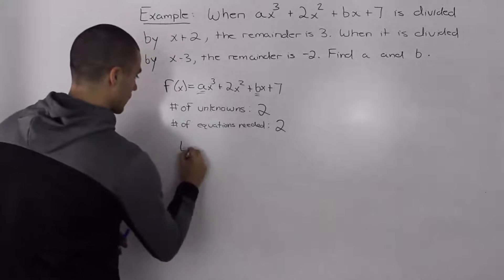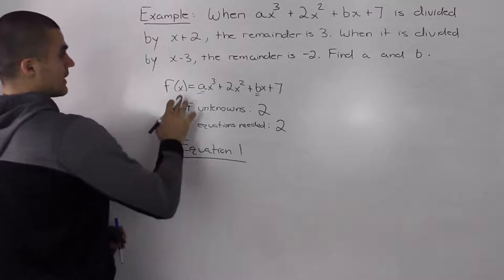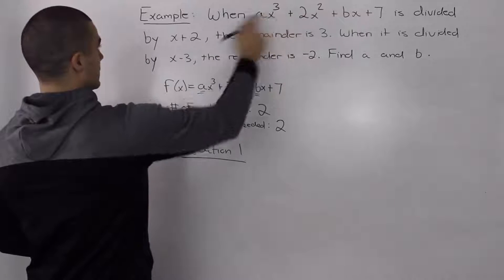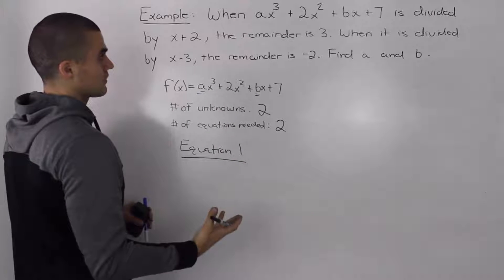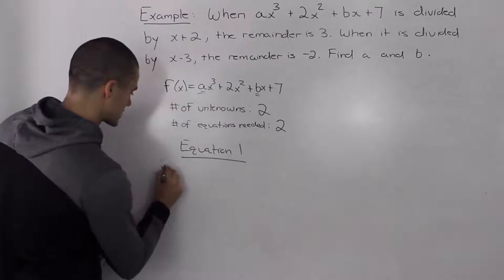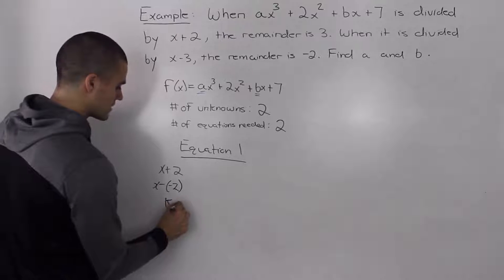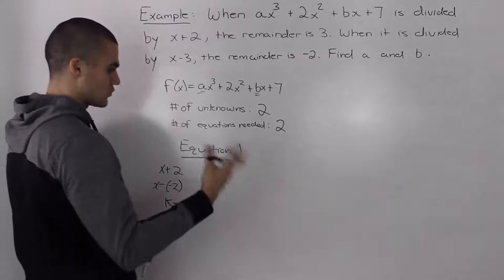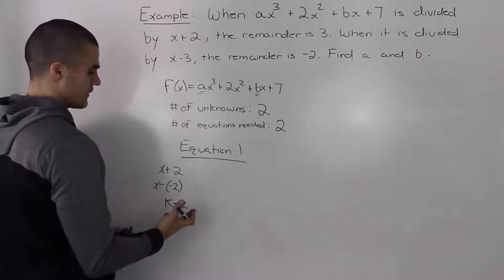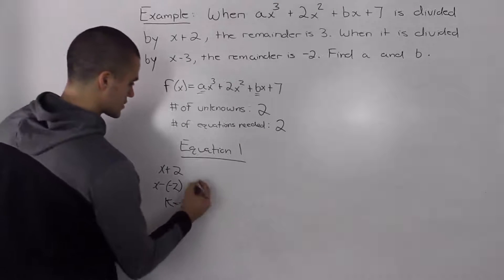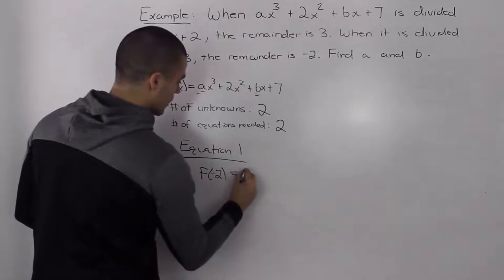Let's find our first equation. We're told that when we divide this dividend by x plus 2, the remainder is 3. So we can make an equation using the remainder theorem. If our divisor is x plus 2, to put it in the x minus k form, we write x minus negative 2, so our k value is negative 2. The remainder theorem states that when dividing by an x minus k divisor, the remainder is f of k. So f of negative 2 is equal to our remainder of 3.